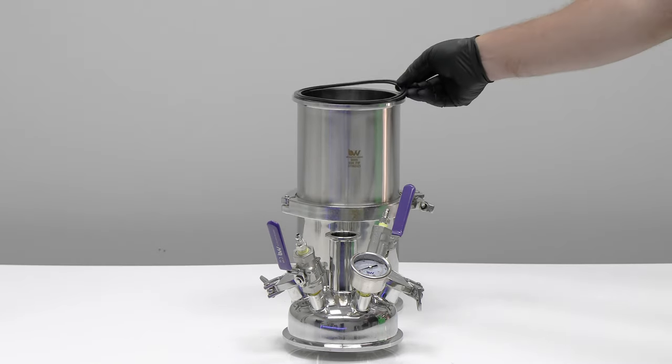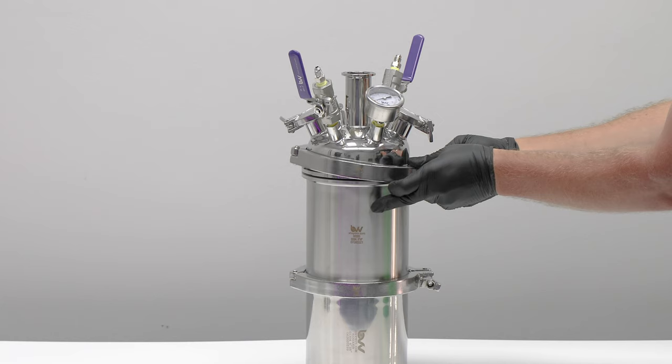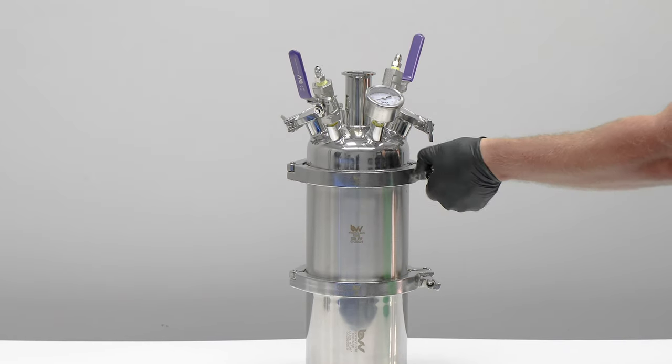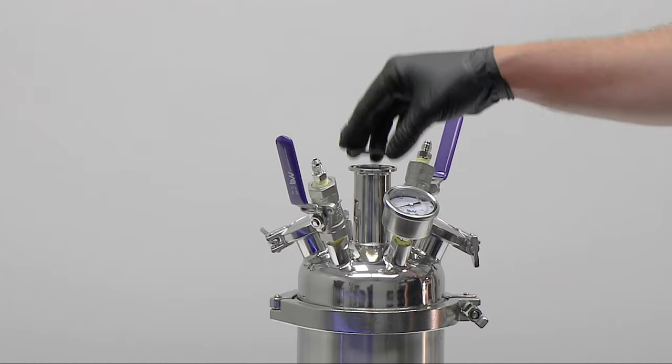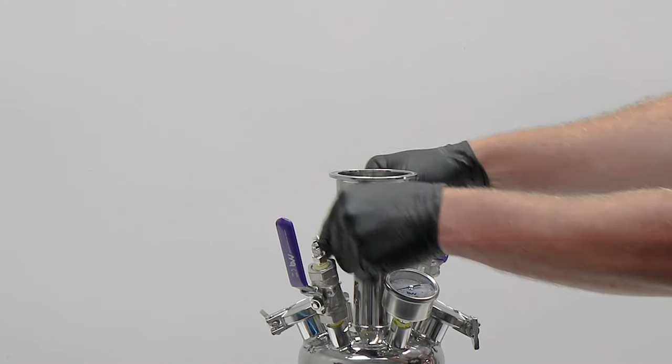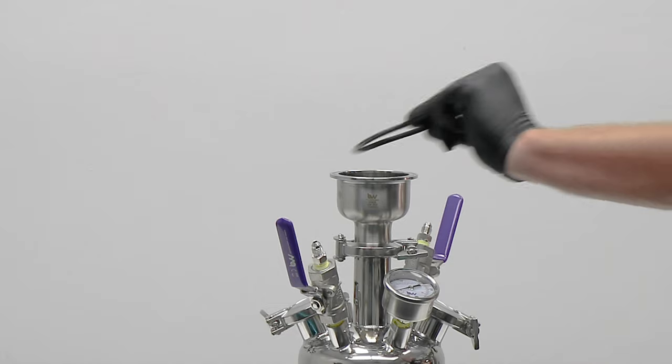Place the hemispherical lid on top of the extractor base. Secure with a single pin clamp. Put the mesh gasket on top of the extractor base and attach the hemispherical reducer to the column.